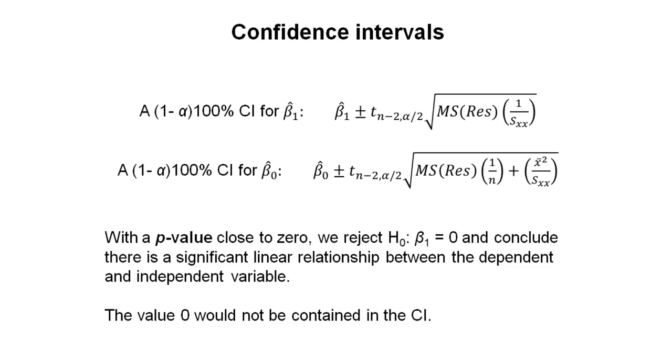If we have a p-value very close to zero, we would reject the null hypothesis that beta 1 equals zero and conclude that there's a significant linear relationship between the dependent and independent variable. If we looked at the values within that confidence interval and rejected the null hypothesis, the value zero should not be contained within the confidence interval.